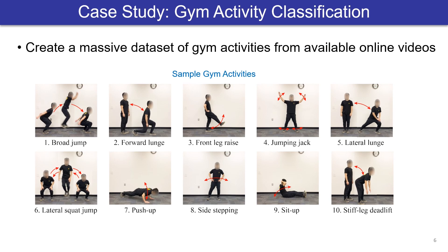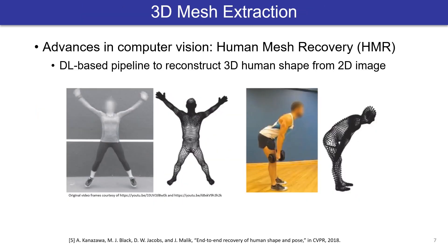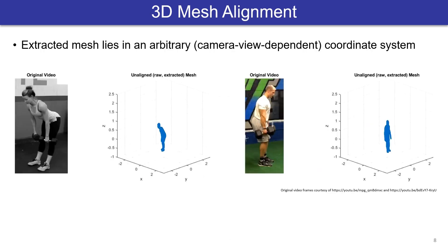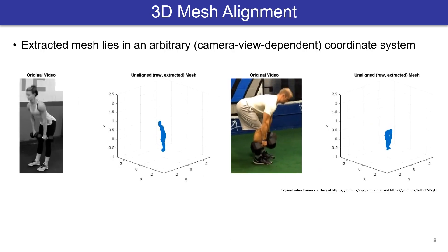We next discuss our proposed approach in more detail in the context of gym activity classification. In this task, we want to use Wi-Fi signals to classify 10 kinds of workouts using machine learning. First, we create a large video dataset of these activities from YouTube videos. Then, for each video frame, we utilize a state-of-the-art computer vision algorithm to extract the 3D mesh of the person in the video.